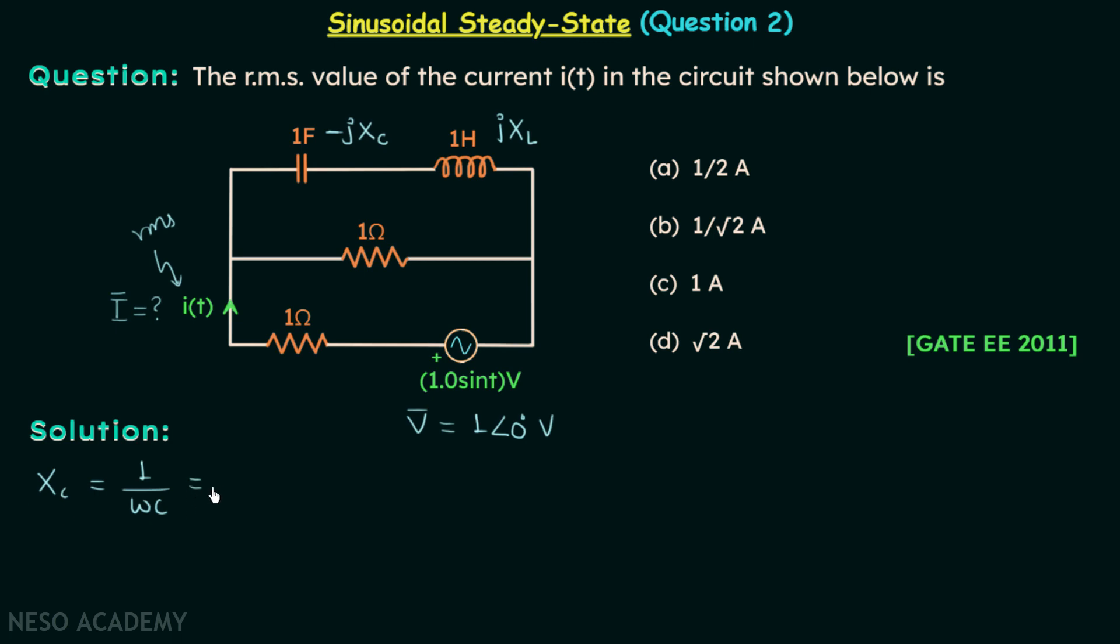So xc is equal to 1, and xl we know it is equal to omega l. Omega is 1, l is also 1.